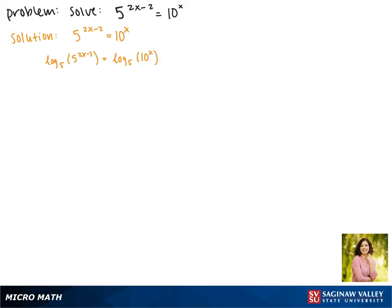Our logarithm rules say that something in the exponent can be brought out front, so this becomes 2x minus 2 times the log base 5 of 5 equals x times the log base 5 of 10. Now the log base 5 of 5 is equal to 1, so this gives us 2x minus 2 equals x times the log base 5 of 10.